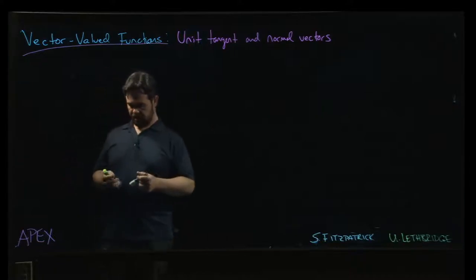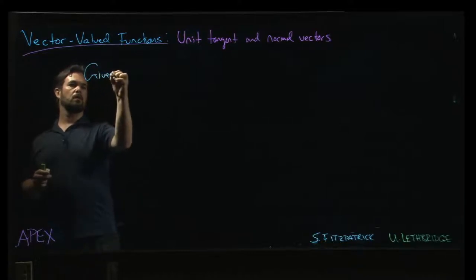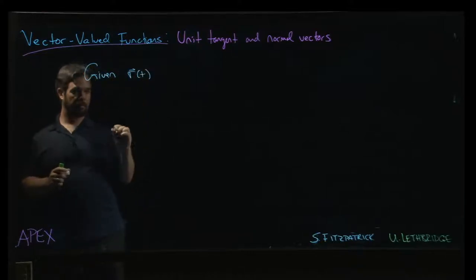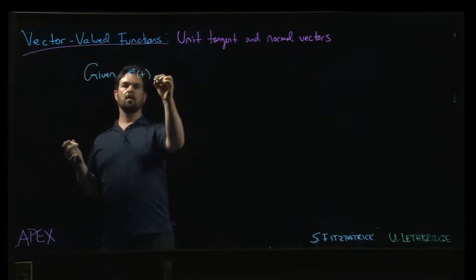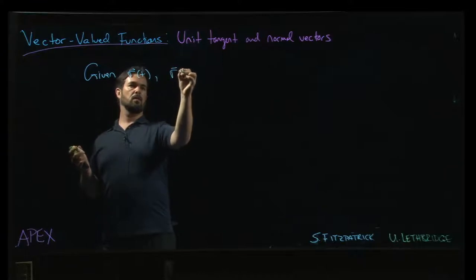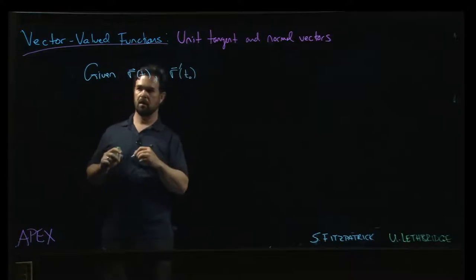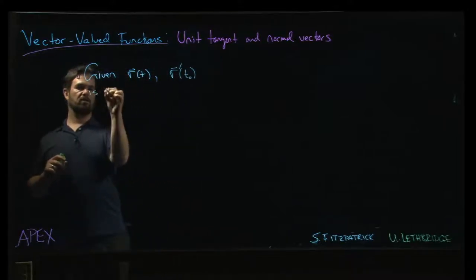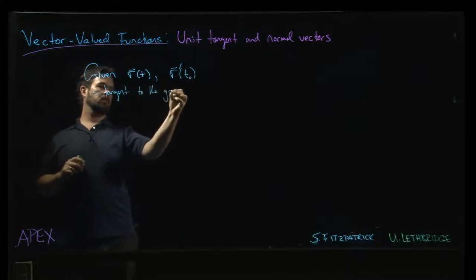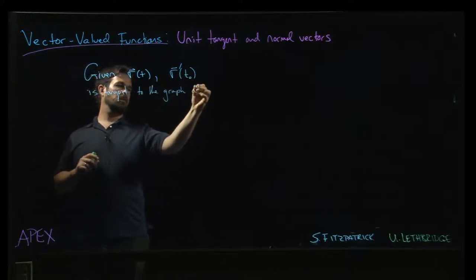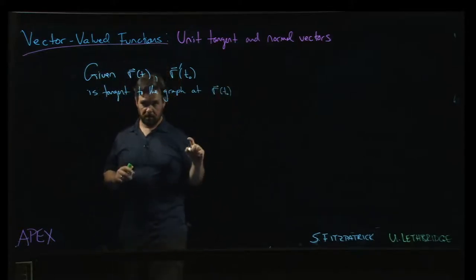So we know that if we're given r of t, some vector valued function, we know that r prime of t0 is tangent to the graph if you place it at the corresponding point r of t0 on the curve.